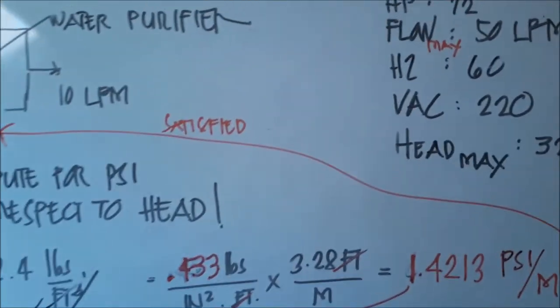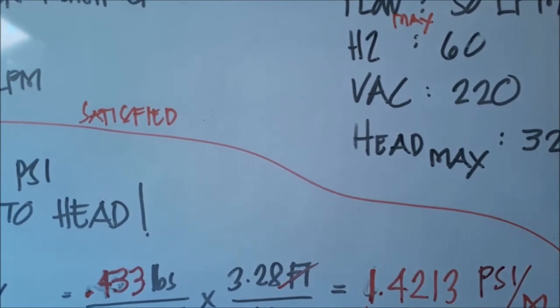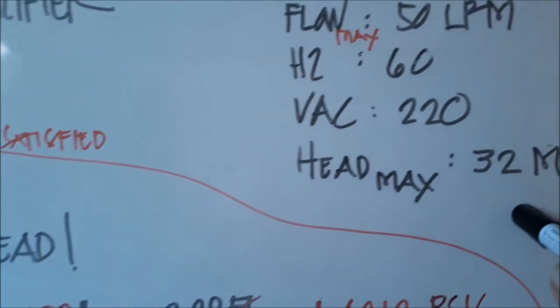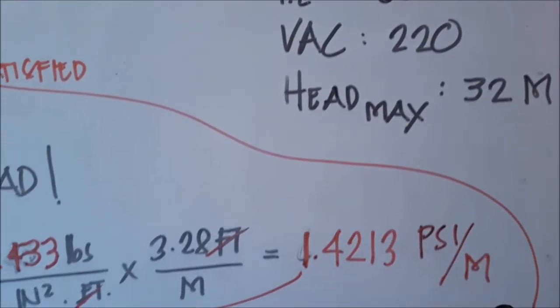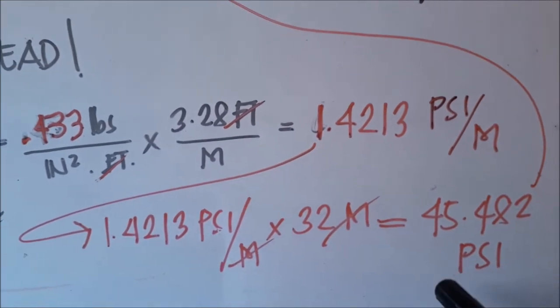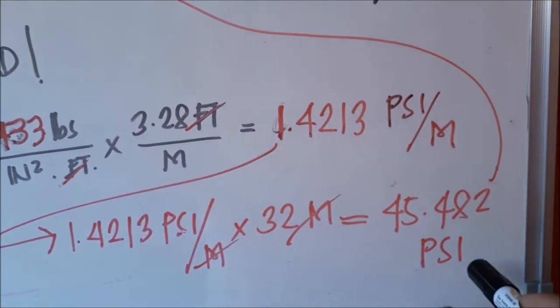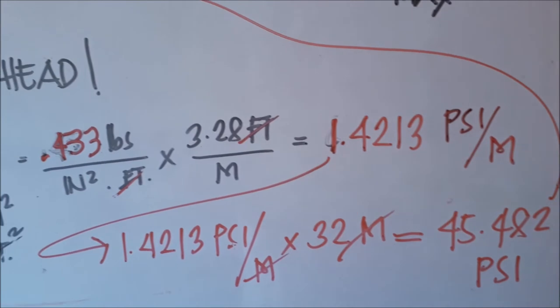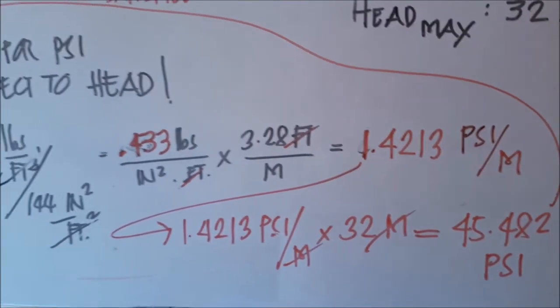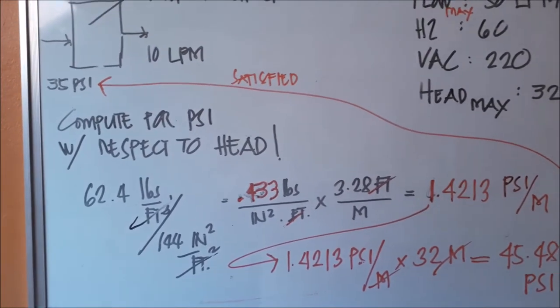So that 32 meter head that I searched on the internet or web for the pump - 32 meter head, this is the maximum head and maximum flow - the equivalent pressure of 32 meters is 45.482 PSI. So we now have the pressure. See how easy it is to convert meter to PSI.